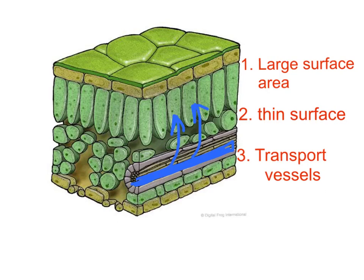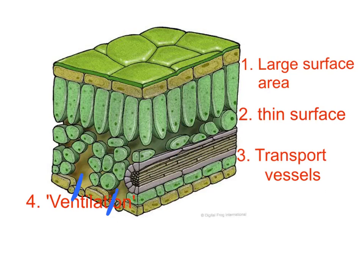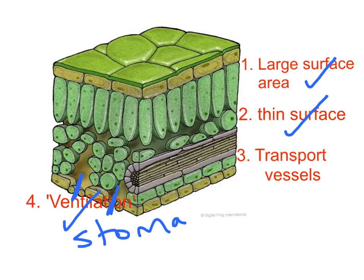Water is worth mentioning because there is a good transport system in leaves. Fourthly, plants have stomata to enable gaseous exchange. The stomata are the pores, mostly on the lower surface, that allow gases in and out of a leaf. For exam purposes, the three key adaptations are: the flattened shape gives a big surface area; the gases don't have far to diffuse; and the stomata allow gases in and out.